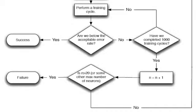The flowchart continues onward with the top diamond where we are saying, are we below the acceptable error rate? Now have we completed 1,000 cycles? Well, if we have, then we increment N by one. So we are now going to look at an additional layer in the hidden layer.